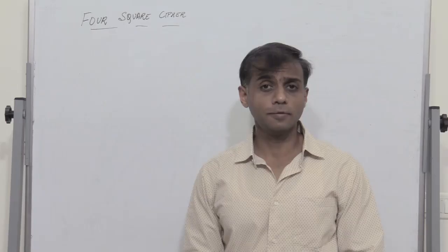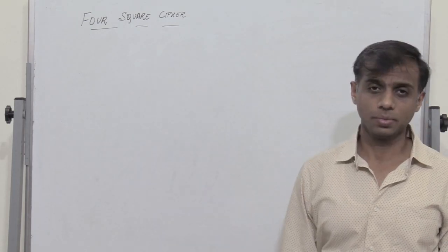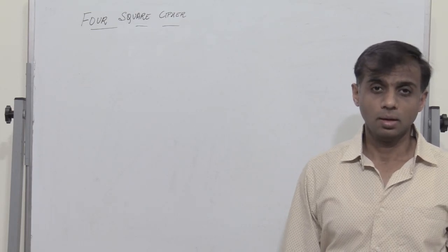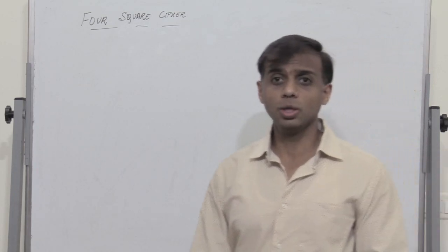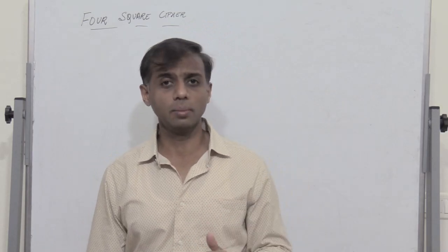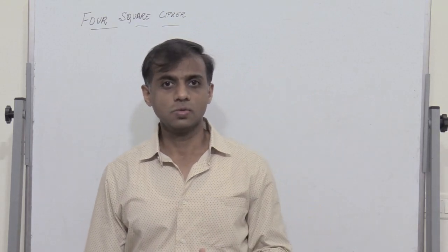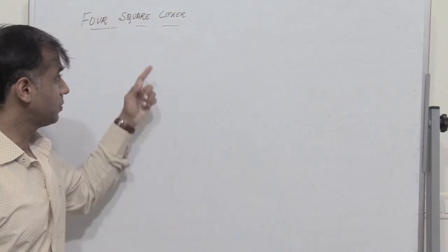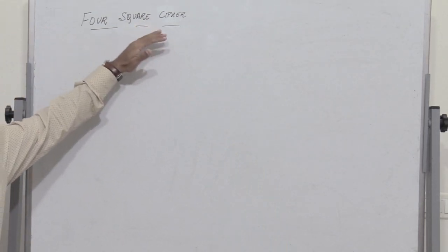Welcome back. Let us go through a very interesting classical encryption technique which is known as a four-square cipher. This is a digraph and is a substitution cipher. Just like what we do in Caesar's cipher, where a given alphabet is substituted with another alphabet — the letter A was replaced by D and so on. So this is a substitution cipher, and even here this is a substitution cipher but it is a digraph.